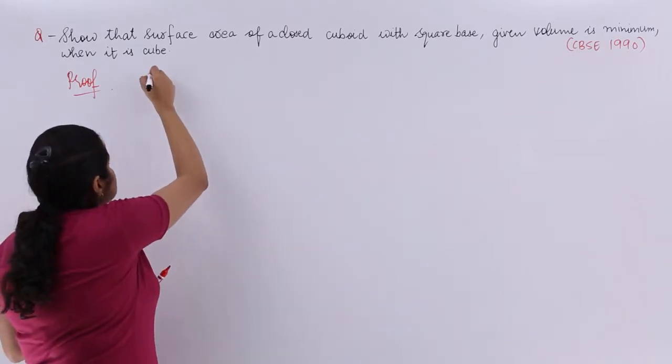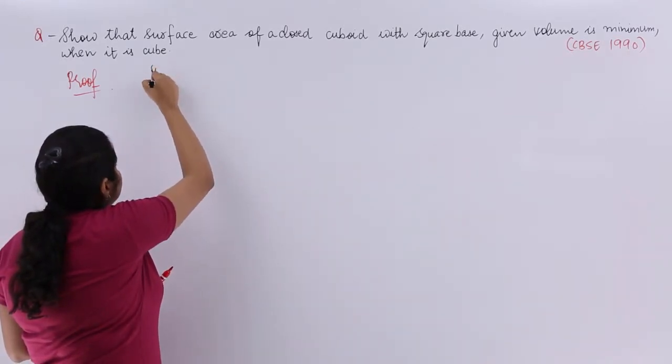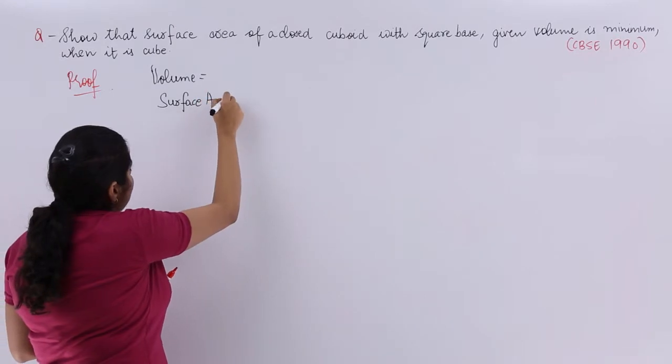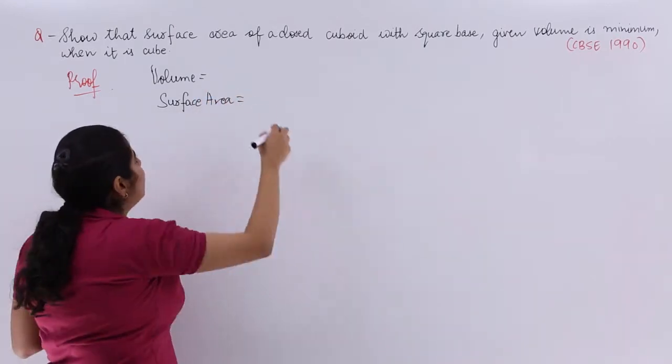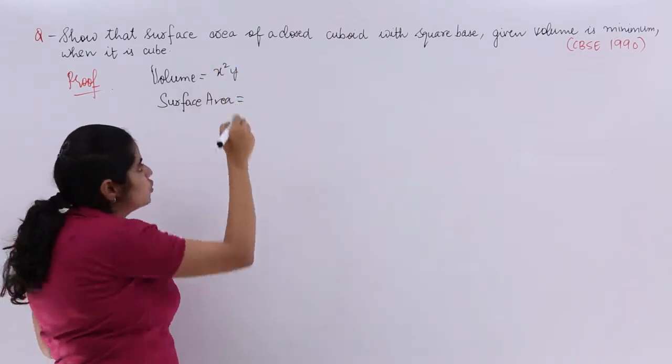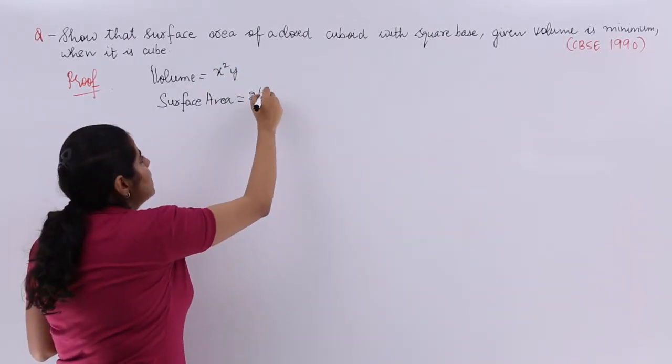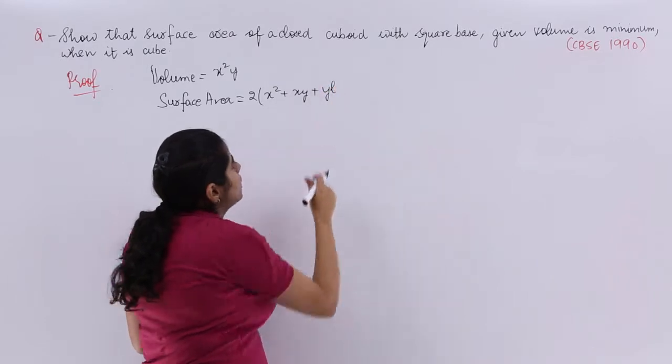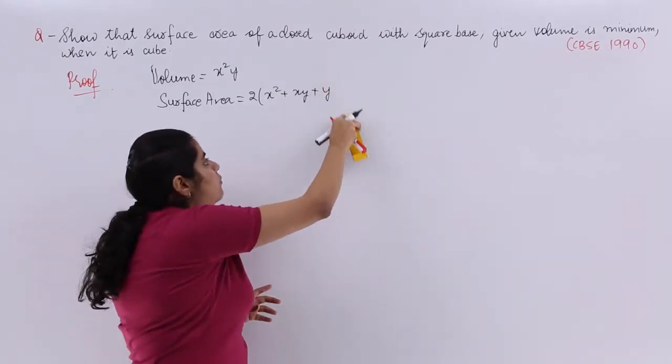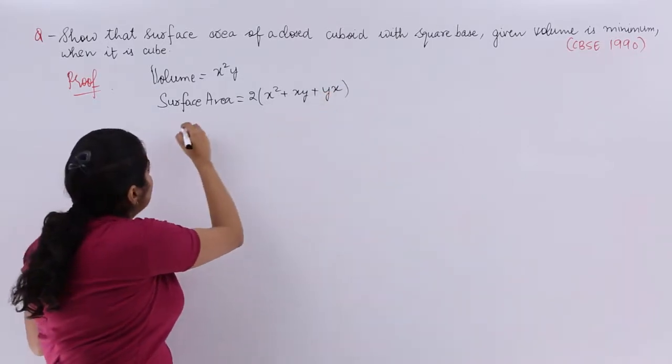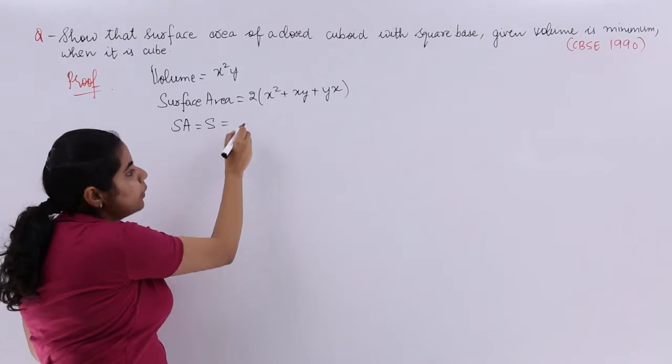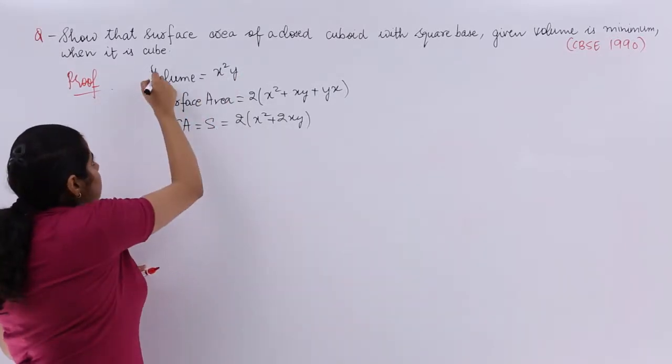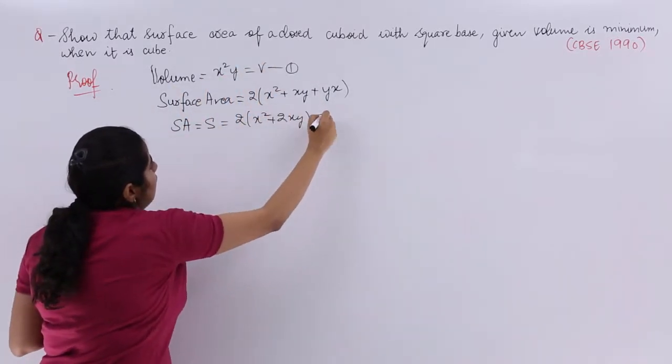I have to say my volume and my surface area are what? Let's see my volume would be equal to L into B into H which is X into X into Y. My surface area would be equal to twice multiply LB plus BH plus HL, which is twice XY. So it is S is equal to twice multiply X square plus 2XY and volume is V. Equation number 1, equation number 2.